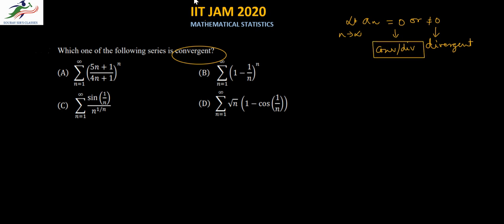Let's check the first series. We write y equal to the limit as n tends to infinity of a_n, which is (5n + 1) / (4n + 1) whole to the power n.